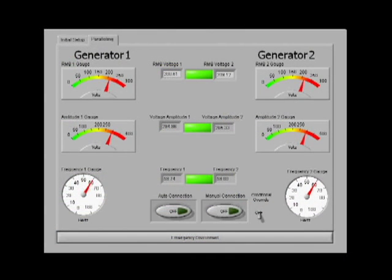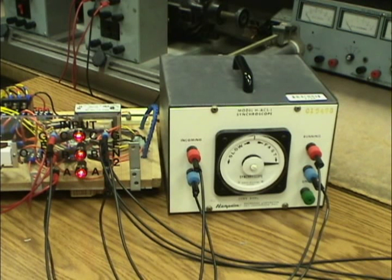LabVIEW indicates that the voltages and frequencies are matched, and then the auto connect button is pressed to begin the phase angle difference detection. The synchroscope is introduced to help visually represent that the auto connection feature works correctly. When the needle of the scope is near the 12 o'clock position, the generators will connect by closing a relay connecting the generators' outputs together.